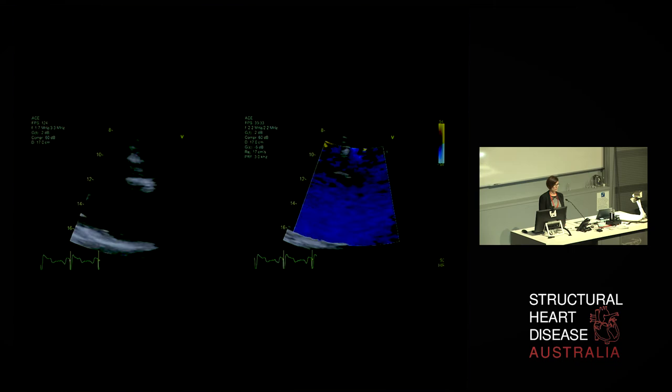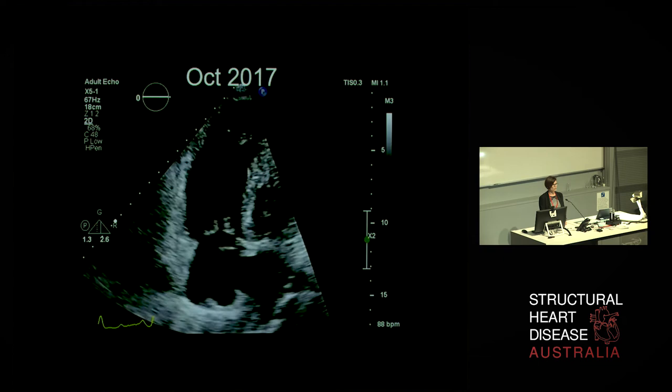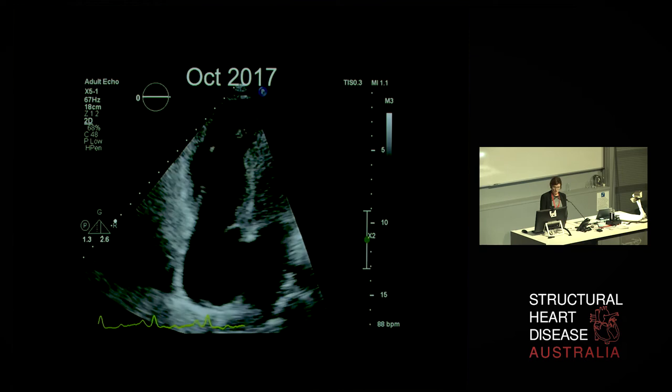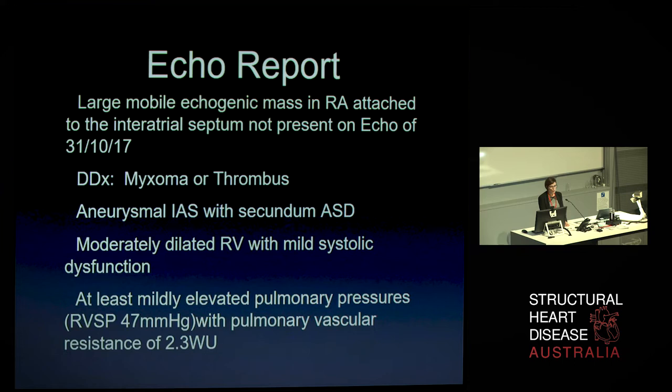We went back and looked at the echo from six months before, because surely this couldn't have evolved in six months. There was no mass in the right atrium at that time, but there was an aneurysmal intra-atrial septum with apparent dropout within it. Our report described a large mobile echogenic mass in the right atrium — either a myxoma or a thrombus — an aneurysmal intra-atrial septum with a secundum ASD, a moderately dilated right ventricle with mild systolic dysfunction, and mildly elevated pulmonary pressures with PVR calculated by the Abbas formula at 2.3 wood units.